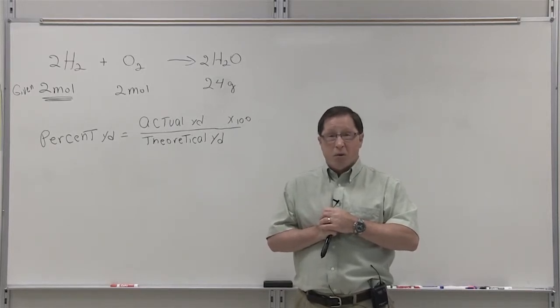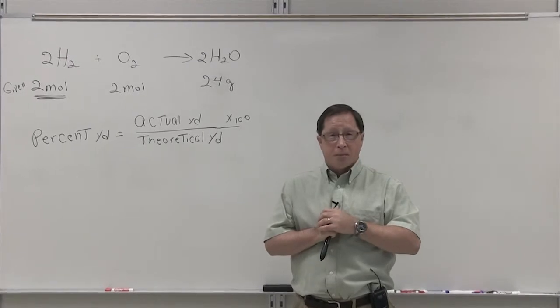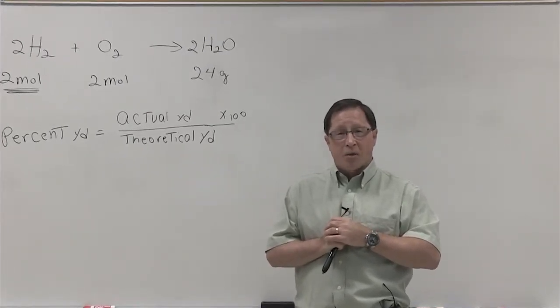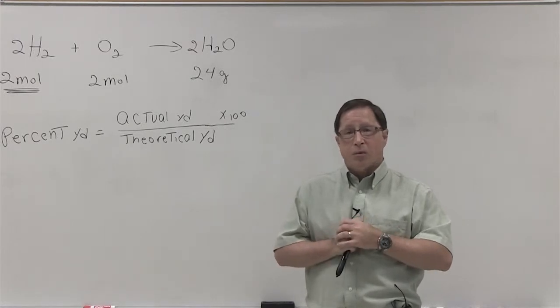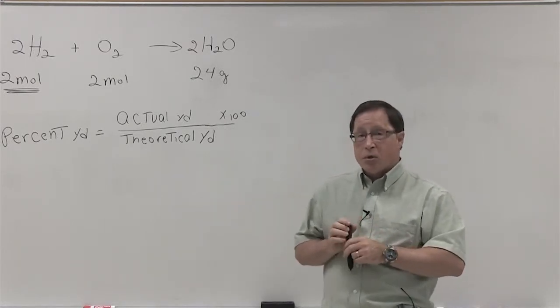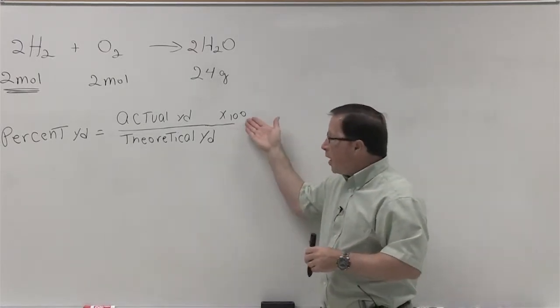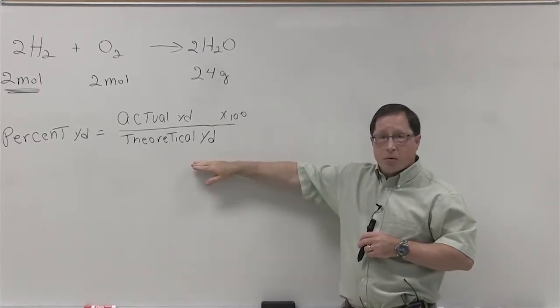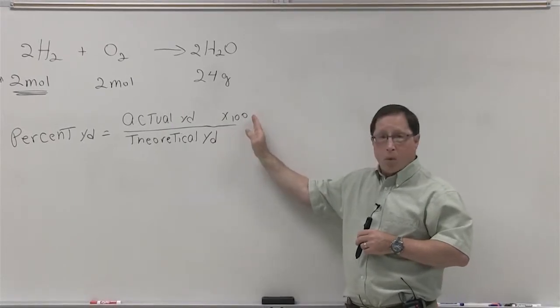Sometimes a better gauge on a reaction's yield is percent yield. Percent yield is the actual yield that you obtain from your reaction divided by its theoretical yield multiplied by 100.